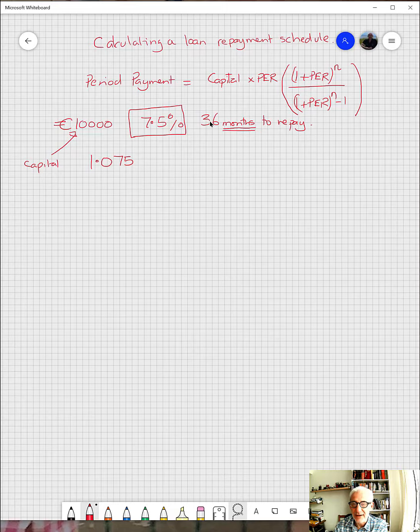So here we have a problem where we have got the annual rate, but we're going to be paying back over months. So we need to calculate the period equivalent rate in months for this annual rate that we have here. Once we've done that, we can just put all the numbers into a calculator and get the answer out.